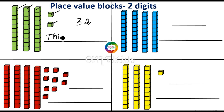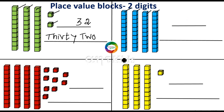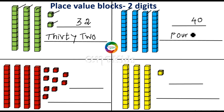T-H-I-R-T-Y, 30, T-W-O — 32. And here one, two, three, four — four ten-blocks are there and zero one-blocks, so you have to put zero in the ones place and four in the tens place. This represents the number 40 — F-O-U-R-T-Y, 40.